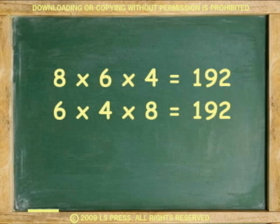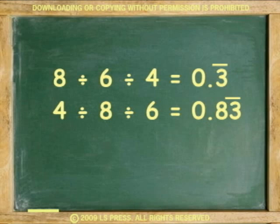Or multiply 8 times 6 times 4 equals 192 and rearrange it to 6 times 4 times 8 and still get the same answer of 192. If you try the same with division, 8 divided by 6 divided by 4 and 4 divided by 8 divided by 6, it will not work.